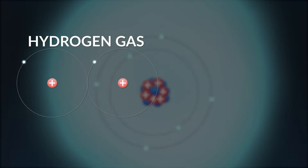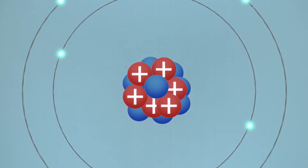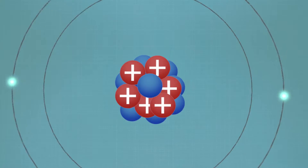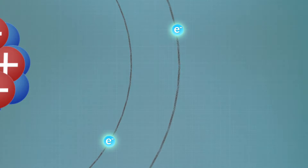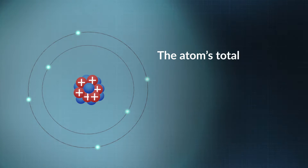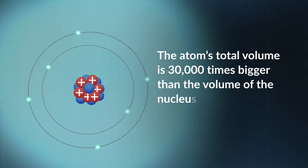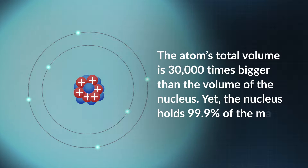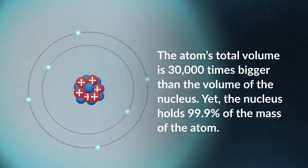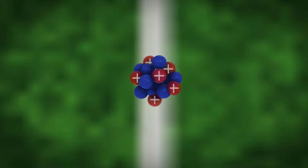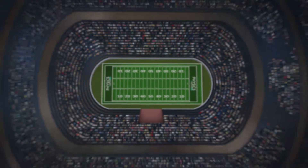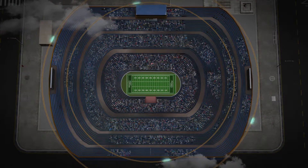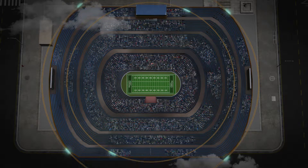Electrons are what chemically binds atoms together into molecules — everything from hydrogen gas to hemoglobin. The nucleus is positively charged and holds most of the mass of the atom. The electrons are negatively charged and have little mass. The atom's total volume is 30,000 times bigger than the volume of its nucleus, yet the nucleus holds 99.9% of the mass. If the nucleus were a golf ball at the 50-yard line, the electron cloud would be the size of the entire football stadium.